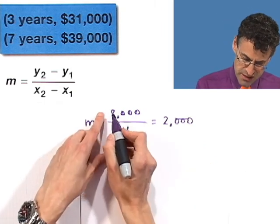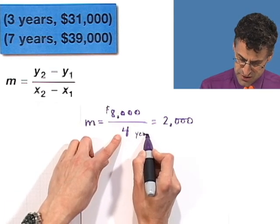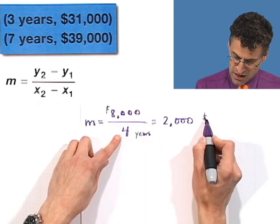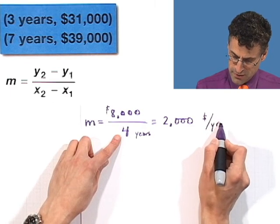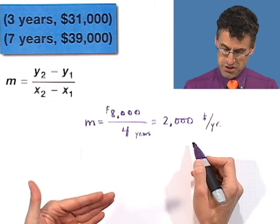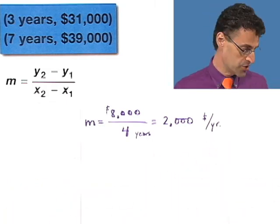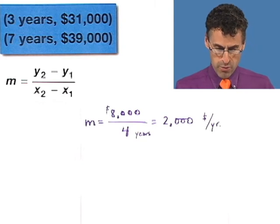And you can see that for yourself, because what are the units? The units here are dollars, and the units here are years, and so this is dollars per year. So it means that the value of the painting is going up, appreciating at 2,000 per year. That's what the slope means. It's the change.